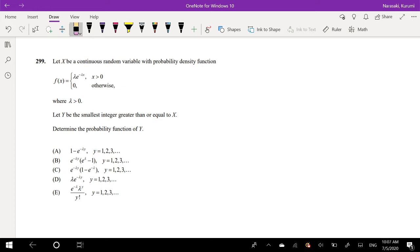Let x be a continuous random variable with the probability density function given here. Let y be the smallest integer greater than or equal to x. Determine the pdf of y. That's what we're trying to find.